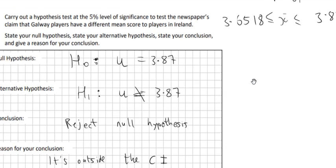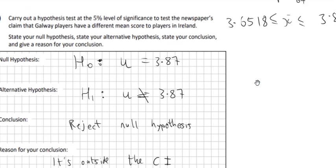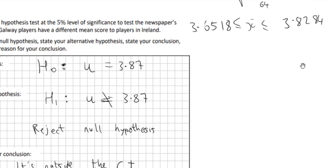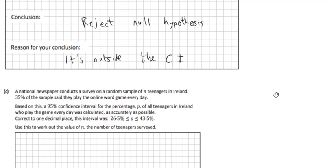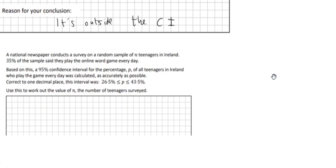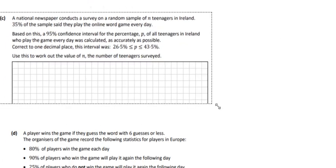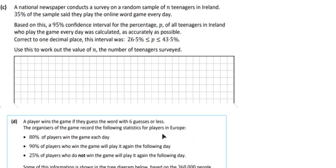The explanation is that 3.87 is outside the confidence interval. This suggests Galway players are slightly better — the mean score for all Irish players is higher than the confidence interval, meaning Galway players complete the game in fewer attempts on average.